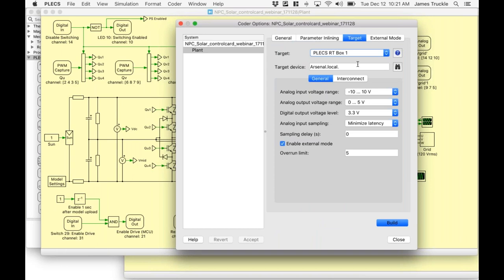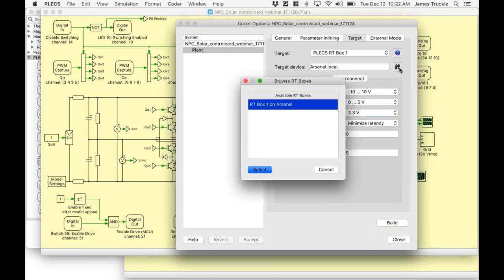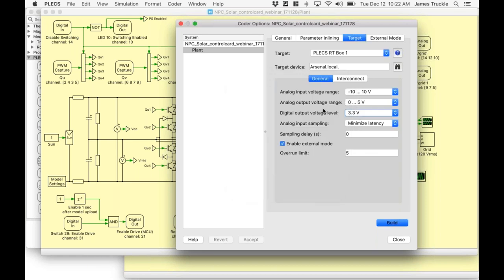In the next tab, we define the target and some configuration settings. We can see that the RT Box supports commonly used analog and digital voltage ranges. I'm targeting an RT Box, and my devices on my network would be listed here. This is what I've chosen to name my box, Arsenal. Great, and now I can build my model. So I'm just going to do this by pressing the Build button here. And then the plant model is discretized, and the code is generated for the discretized model. It's then compiled and uploaded onto the box. This process takes only a few seconds to complete, at which point a blue light comes on indicating that the RT Box is running.